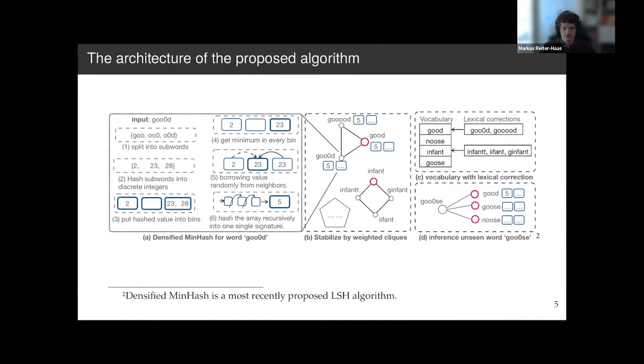Here's the architecture of our proposed algorithm, FLAN. The first step is converting all the input words into a hash value. The second step is mapping all the words with the same hash value into a clique in the graph. The third step is by looking at the graph, we can extract the vocabulary and the lexical correction. The last step is what we want to handle for testing cases during inference.